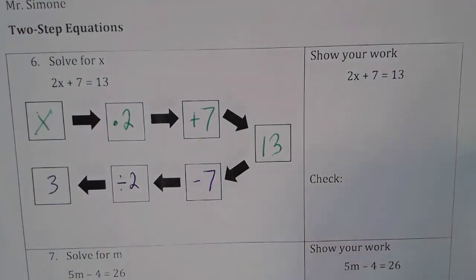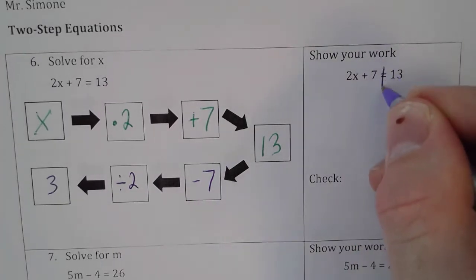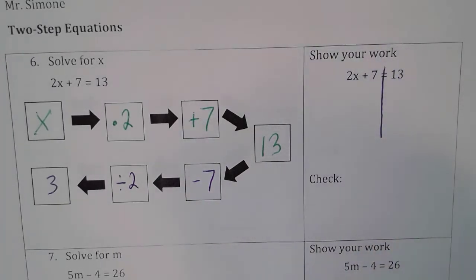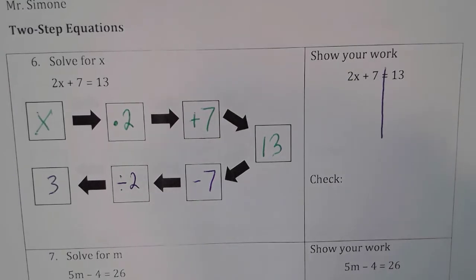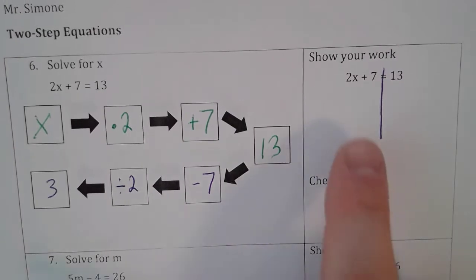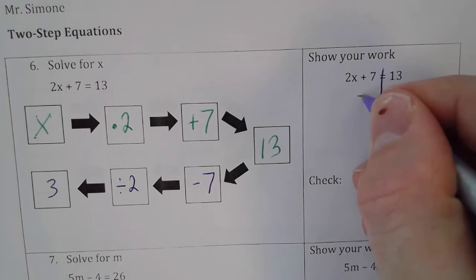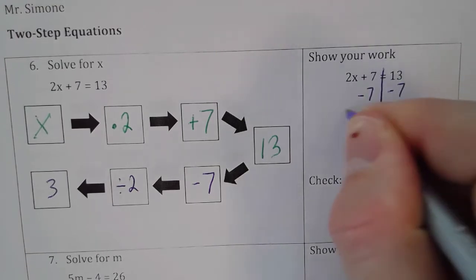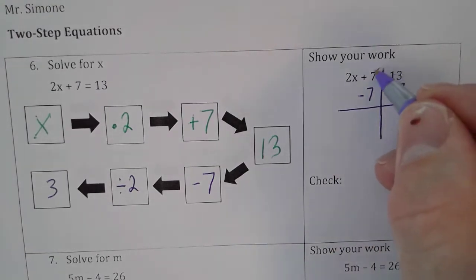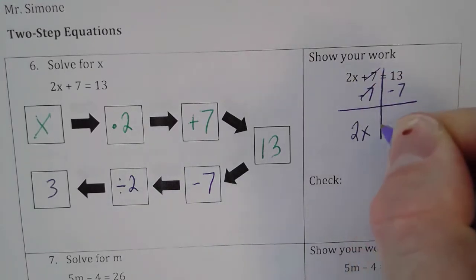Now to show your work more officially, you can draw your centerline equal sign down. We start with the process of trying to get rid of the 7 first. Sometimes I like to cover up my variable and it will tell me what to start with. In this case, you're going to subtract by 7 on both sides. When you subtract by 7, just like we did here, you're left with 2x on the left side and 6 on the right because 13 minus 7 is 6.